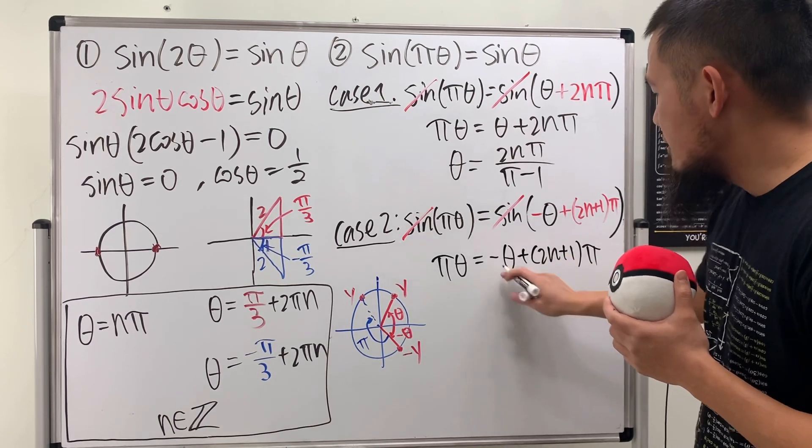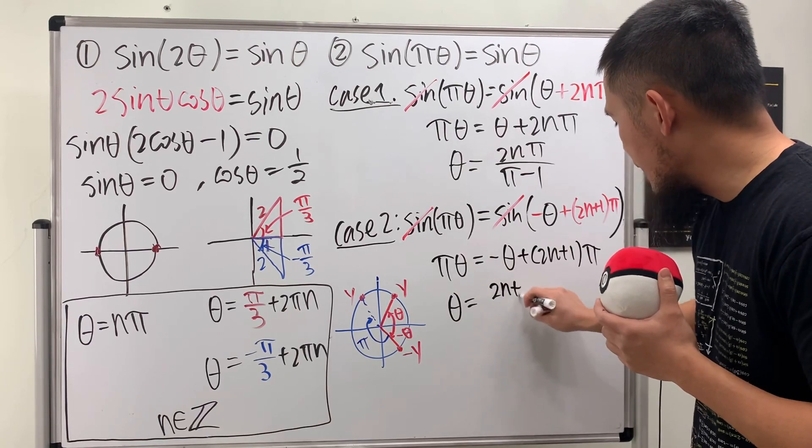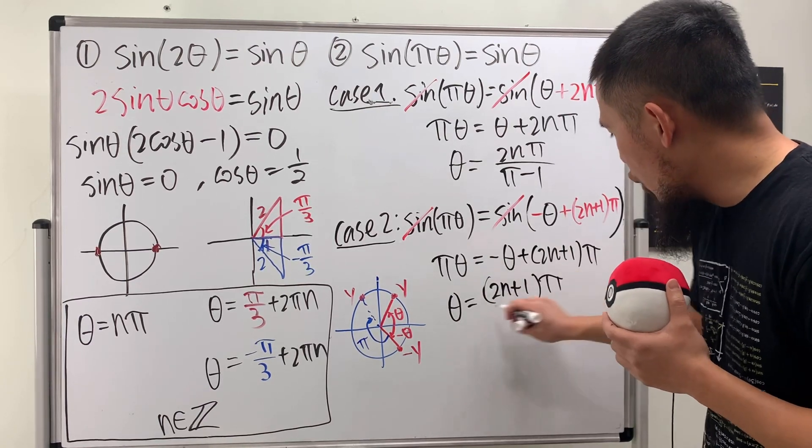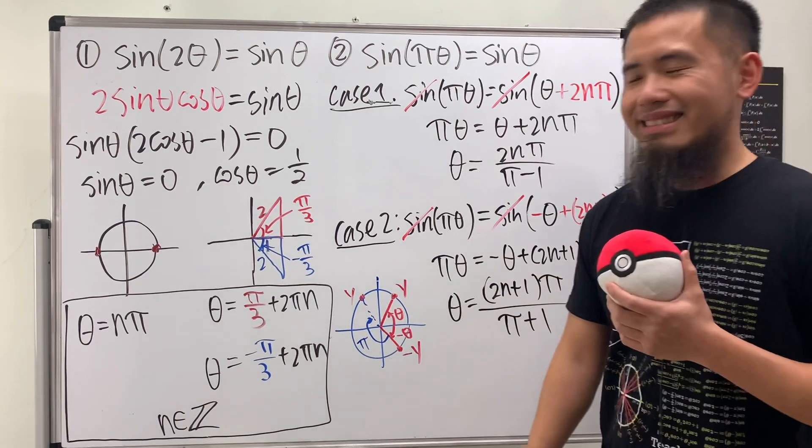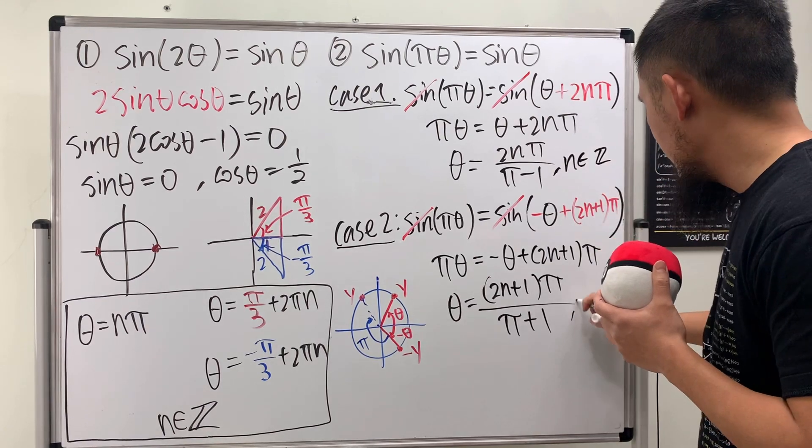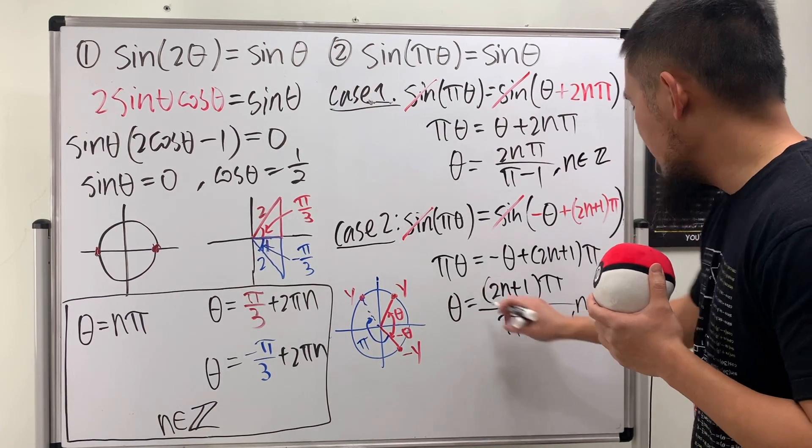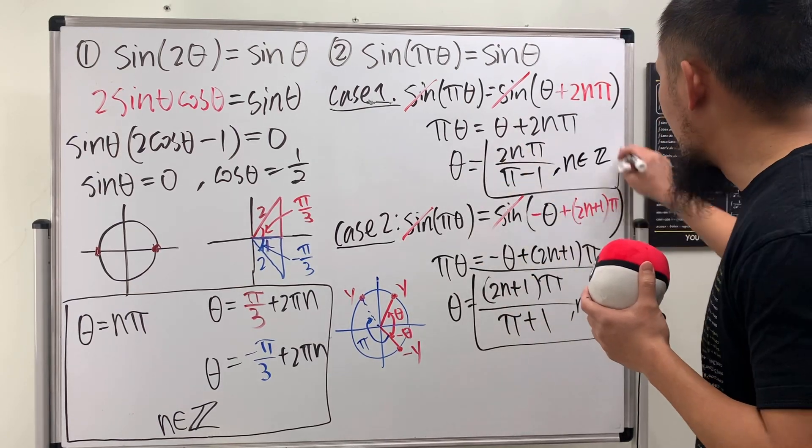Pi theta equals negative theta plus 2 n plus 1 pi. And then this stays, this moves to the other side. So, theta equals we have 2 n plus 1 pi over pi plus 1. So, again, n is an integer. n is an integer. In the end, of course, it bugs our answers. Here, be sure you have both of them. Right?